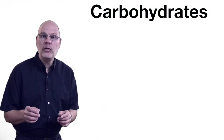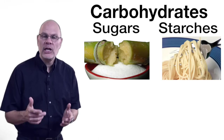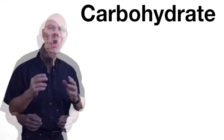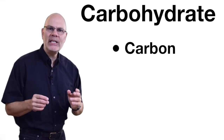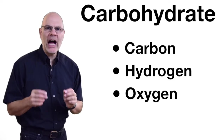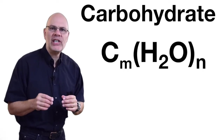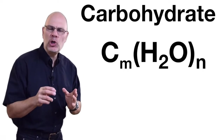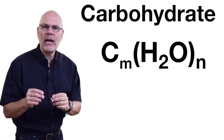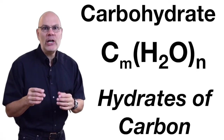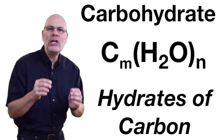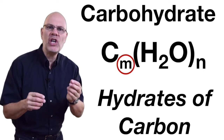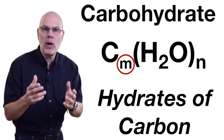Carbohydrates include foods like sugars and starches, and also plant fiber like cotton. All carbohydrates contain carbon, hydrogen, and oxygen. This formula says that the ratio of hydrogen to oxygen is two to one, like water. That makes carbohydrates hydrates of carbon — water attached to some number of carbon atoms.